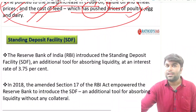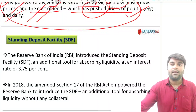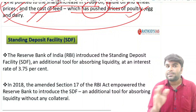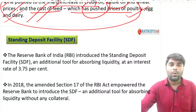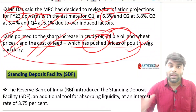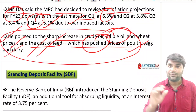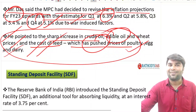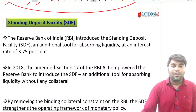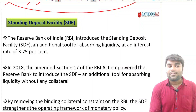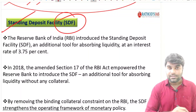He pointed to the sharp increase in crude oil, edible oil, and wheat prices, and the cost of feed which has pushed prices of poultry, egg, and dairy. Due to these reasons, inflation will increase. As they concentrate on inflation, money supply will be decreased, and temporarily the growth will be at a normal rate. Just try to revise this whole topic once or twice and you will get a good perspective with respect to the Indian economy. Next topic is Standing Deposit Facility, SDF.